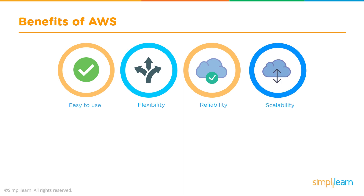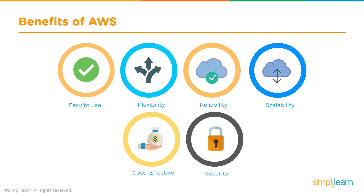The services in AWS are scalable by nature, and most services provide click-button scaling. Services in AWS are very cost-effective, and this becomes even more true when you start using more, since the per-unit price drops further. Security in the cloud is at its highest, with encryption, multi-factor authentication, and the ability to audit logs — ensuring that when you host a service in AWS, you're hosting in an environment built with enterprise security in mind.